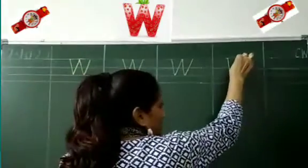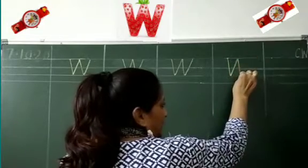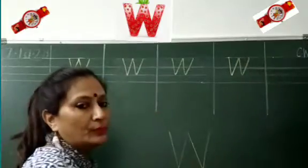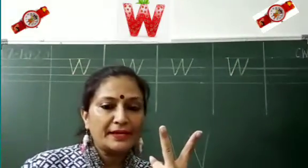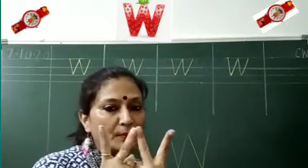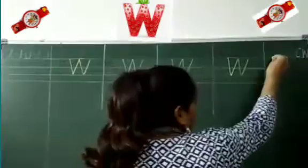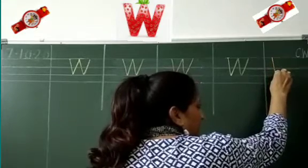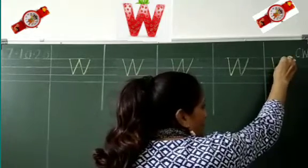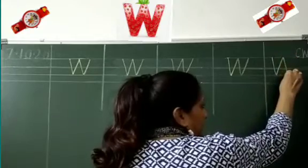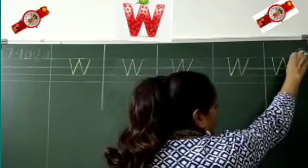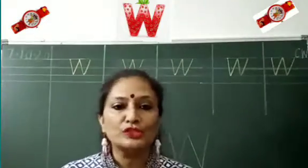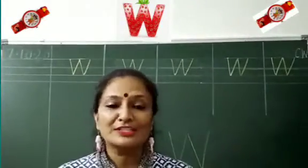First you will write V, then come down and make another V. This is W. Make a slanting line, come down, go up, again come down, make a slanting line, and go up. This way you will write W. W for a watch. W for water.